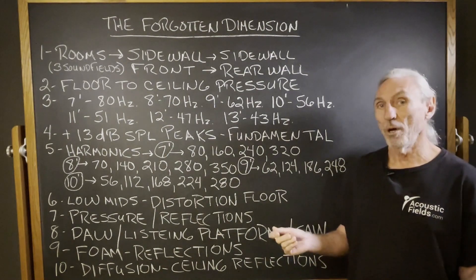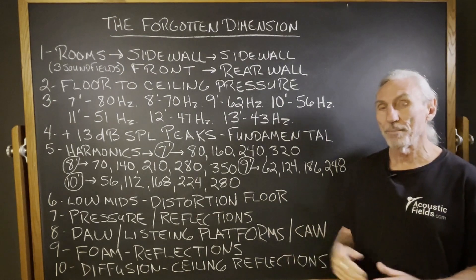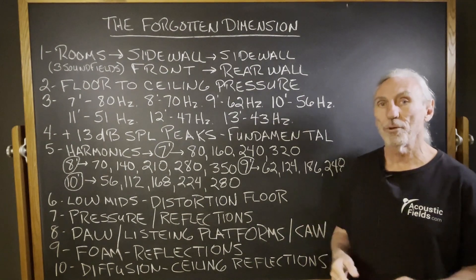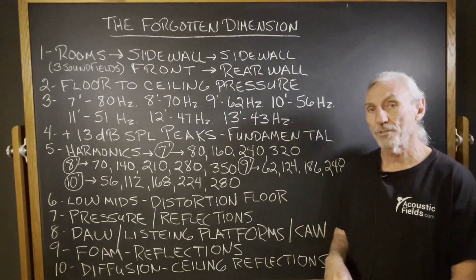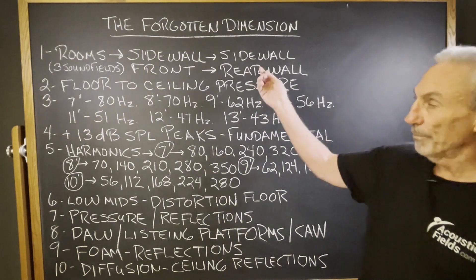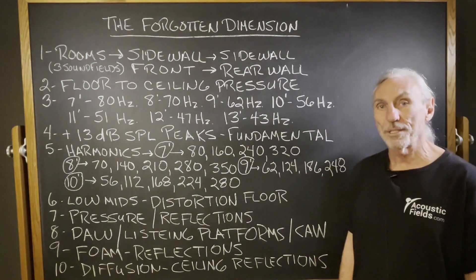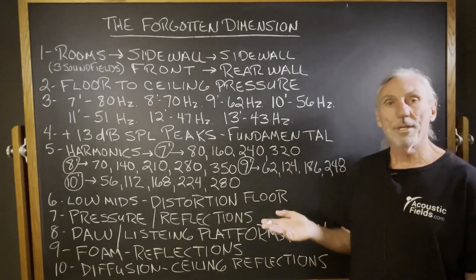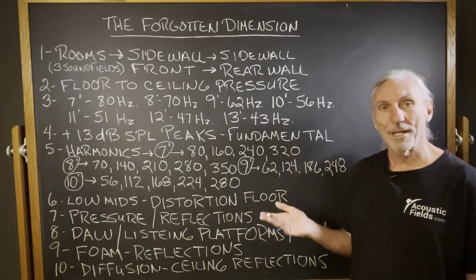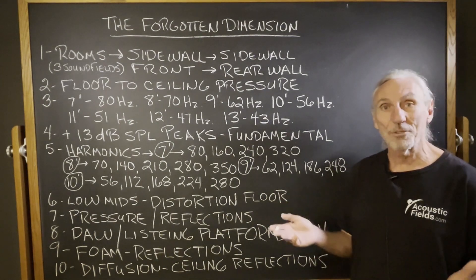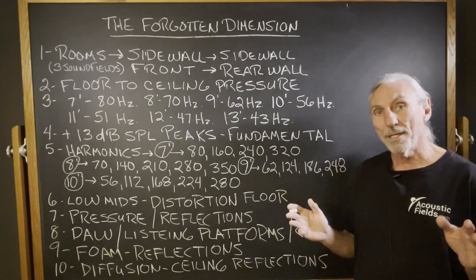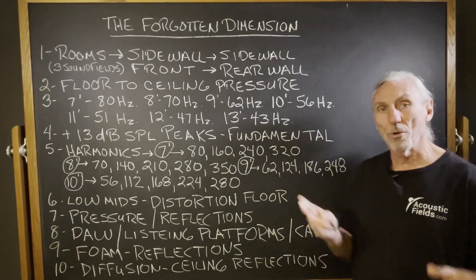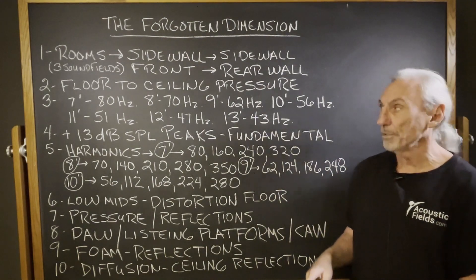We talk about the four walls all the time. When we fill out our room forms and send them in, we always focus on the four walls and the problems that those create, but we also focus on the floor to ceiling dimension too, because we have to consider all surface areas in the room, because all surface areas are contributing to the problem. Each surface area is 17 percent — the point is each surface area creates a certain contribution to the overall problem in the room, so we have to treat those.